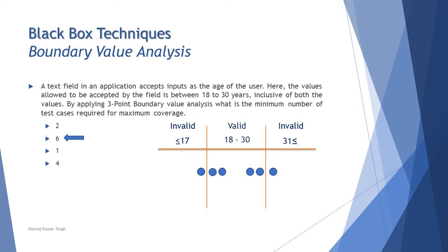Let's look at this example. A text field in an application accepts input as the age of the user. The values allowed to be accepted by the field is between 18 to 30 years inclusive of both values. By applying three-point boundary value analysis, what is the minimum number of test cases required for maximum coverage? Create this simple table and start pointing the boundary values. The boundary values will be 17, 18, 19.